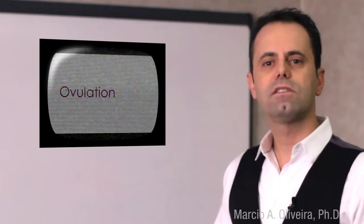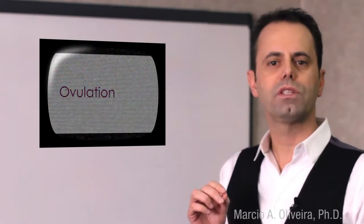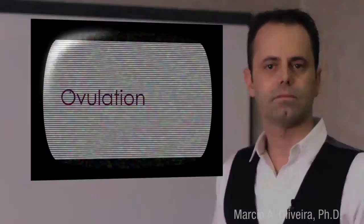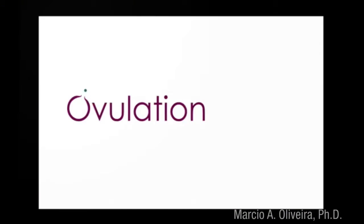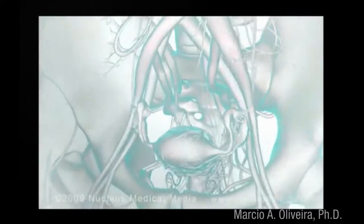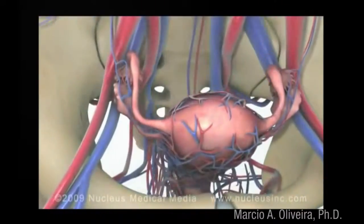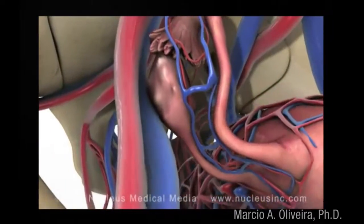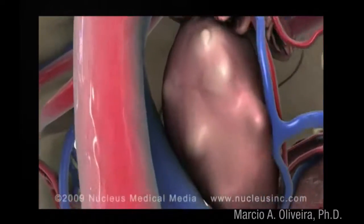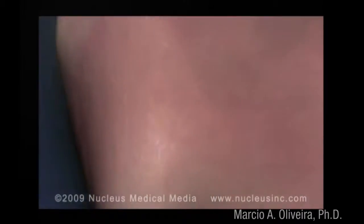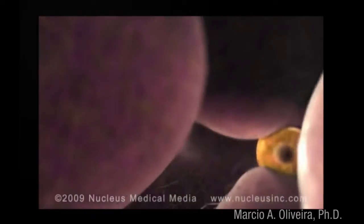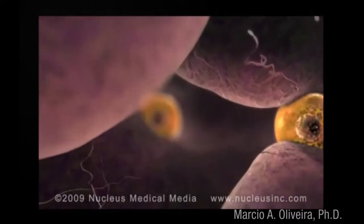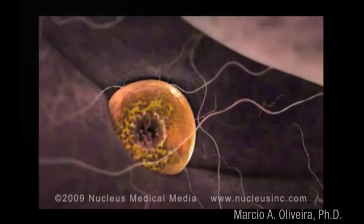Let's look at this animation about ovulation as the first step to understand the fertilization process. Ovulation is a part of the menstrual cycle when the ovary releases a ripe egg or ovum. Inside the ovary are hundreds of thousands of follicles, each a hollow ball of cells with an immature egg in the center.